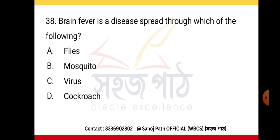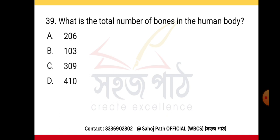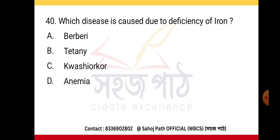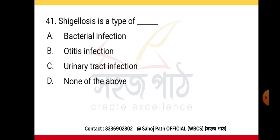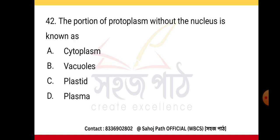Brain fever is a disease spread through mosquitoes. The total number of bones in the human body is 206. Which disease is caused due to deficiency of iron? Anemia. Shigellosis is a type of bacterial infection. The portion of protoplasm without the nucleus is known as cytoplasm.